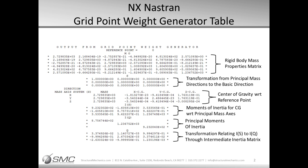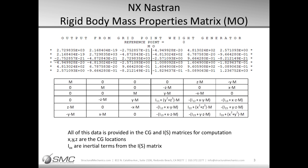The first matrix presented is the rigid body mass properties matrix, or MO, and provides a wealth of mostly useless data. The format of the matrix is shown, where M is the mass of the system, X, Y, and Z are the distances to the center of gravity, and the I-subscript terms are inertia terms. The mass, CG, and inertia values are shown in part 3 and part 5 of the total grid point weight generator output.